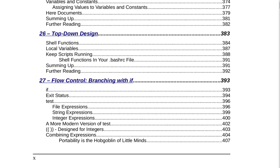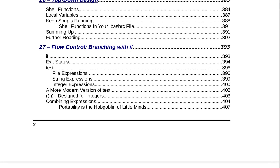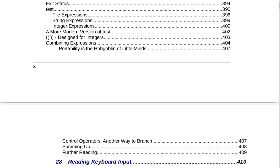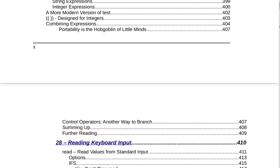Section 27 is Flow Control: Branching with If on page 393. That includes if, exit status, test, file expressions, string expressions, integer expressions, a more modern version of test, double parentheses for integers, combining expressions, portability is the hobgoblin of little minds, control operators as another way to branch, summing up, and further reading on page 409.